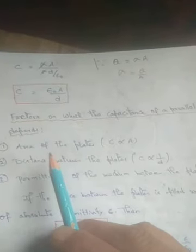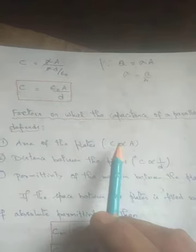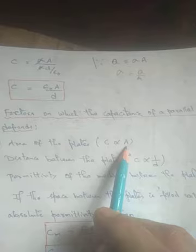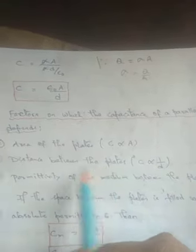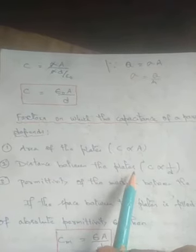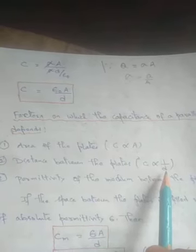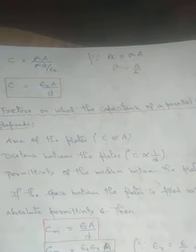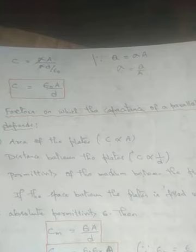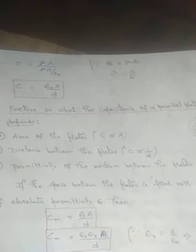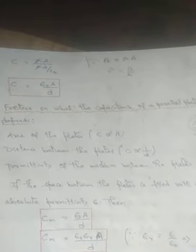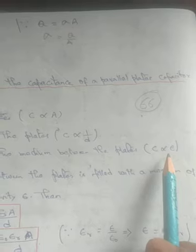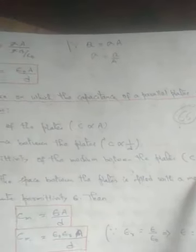The capacitance of a parallel plate capacitor depends on three factors. First, it is directly proportional to the area of each plate — the more the area, the more the capacitance. Second, it is inversely proportional to the distance between the plates — the less the distance, the more the capacitance. Third, it is directly proportional to the absolute permittivity of the medium between the plates, since the capacitance of an air capacitor differs from that of a medium capacitor.